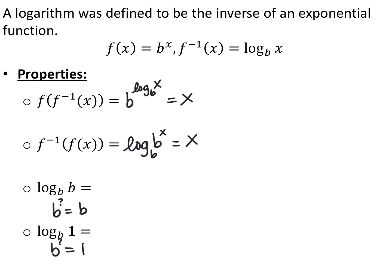For the next two properties, I want to think in exponential form. The first one, log base b of b, is asking: b to what power equals b? We know anything to the first power is itself. So log base anything of itself is 1. Similarly, log base b of 1 asks: b to what power equals 1? What do we raise anything to in order to get 1? That would be 0. So the property is that log base b of 1 is equal to 0. These are four properties that are good to know about logarithms.